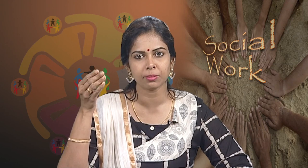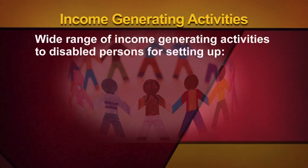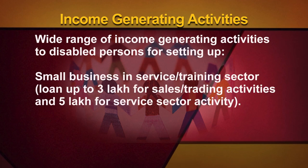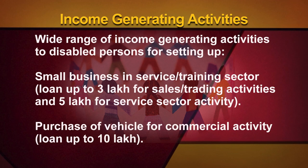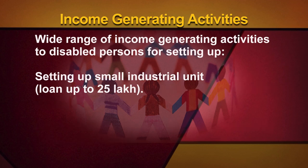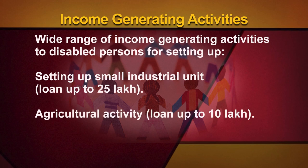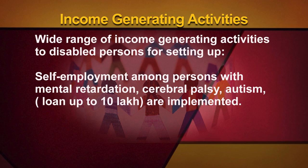The following schemes have been implemented for the welfare of persons with disability. Income generating activities: a wide range of income generating activities for disabled persons for setting up small businesses — loan up to 3 lakhs for sales or trading activities and 5 lakhs for service sector activity. Purchase of vehicle for commercial activity: loan up to 10 lakhs. Setting up small industrial unit: loan up to 25 lakhs. Agricultural activity: loan up to 10 lakhs. Self-employment among persons with mental retardation, cerebral palsy, and autism: loan up to 10 lakhs.